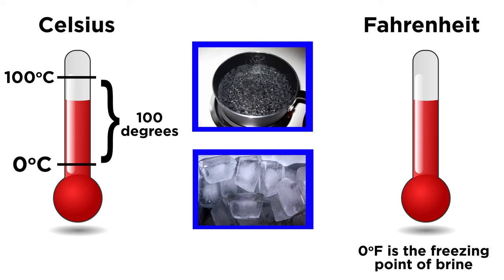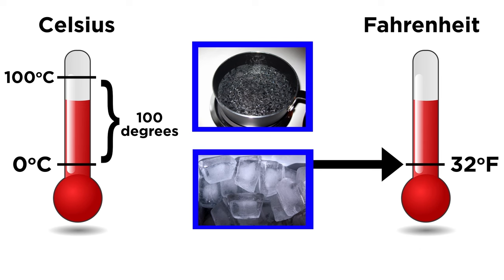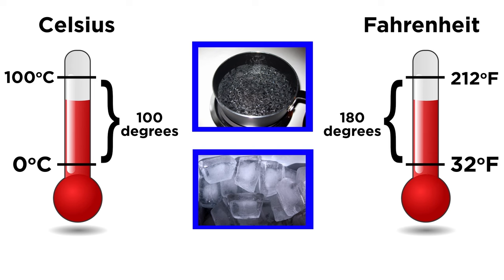Fahrenheit, a little less intuitively, sets zero as the freezing point of brine, which is a saltwater solution. That puts the freezing point of pure water at thirty-two and the boiling point at two hundred and twelve, splitting up the space between them into a hundred and eighty degrees.